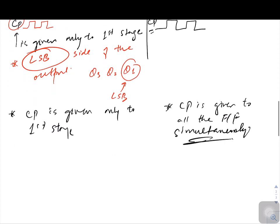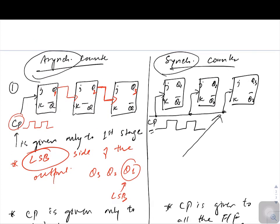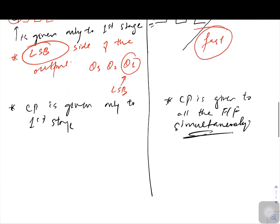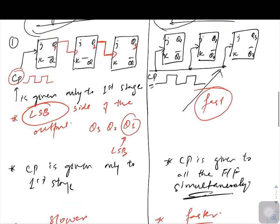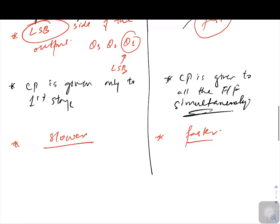Since the clock is given to all stages simultaneously in synchronous counters, these circuits are going to be fast. So synchronous counters are faster, while asynchronous counters are comparatively slower. There is also a problem of propagation delay in asynchronous counters — if you want the output to change at Q3, it is dependent on Q2, and Q2 is dependent on Q1. This ripple effect makes the circuit slower.